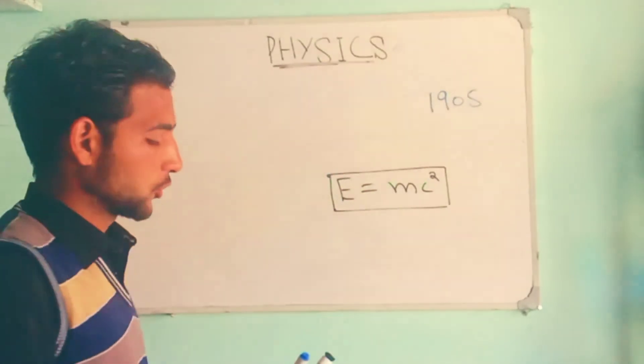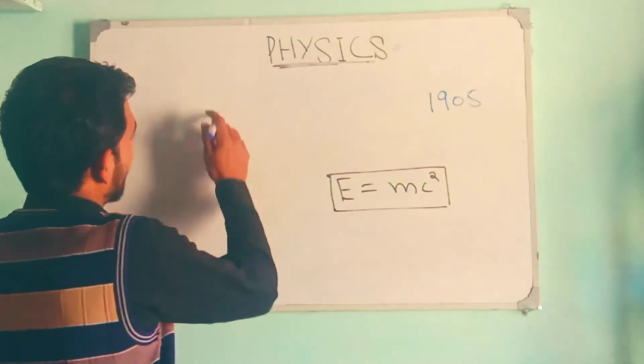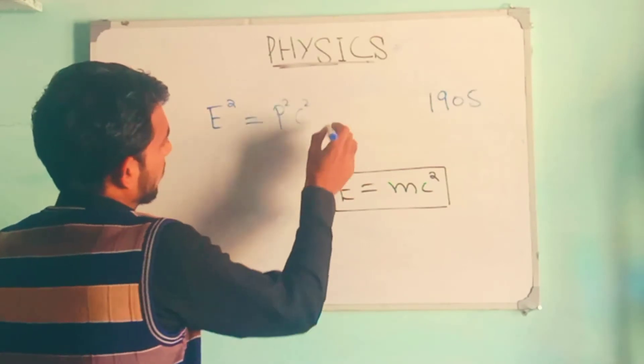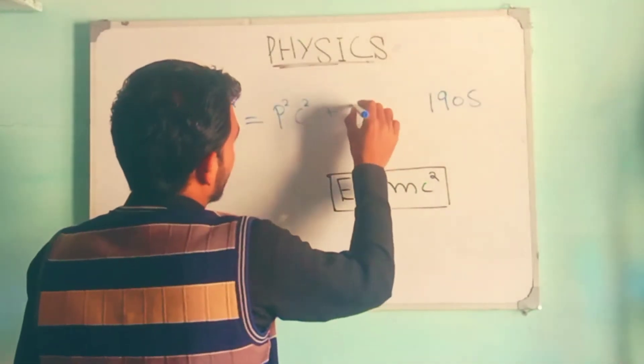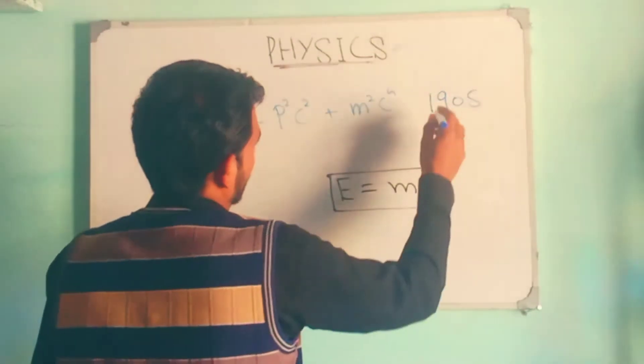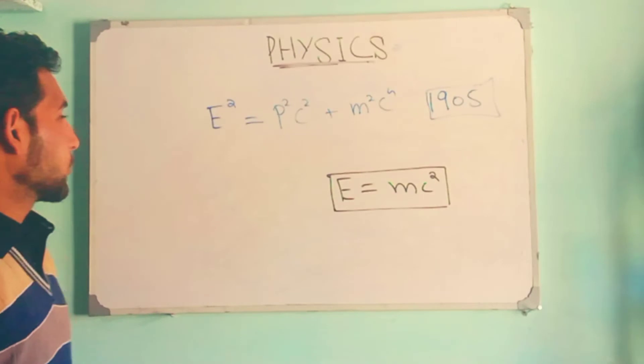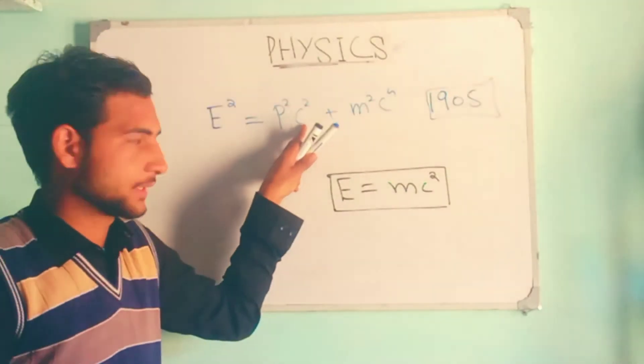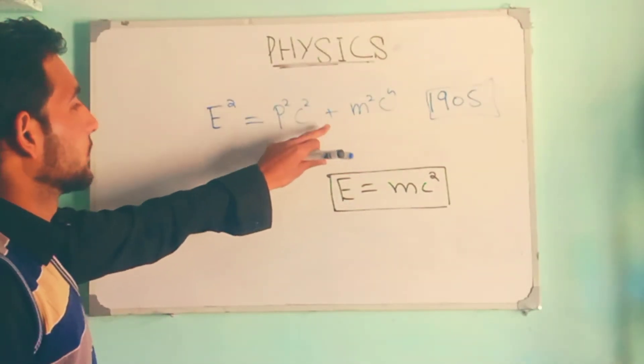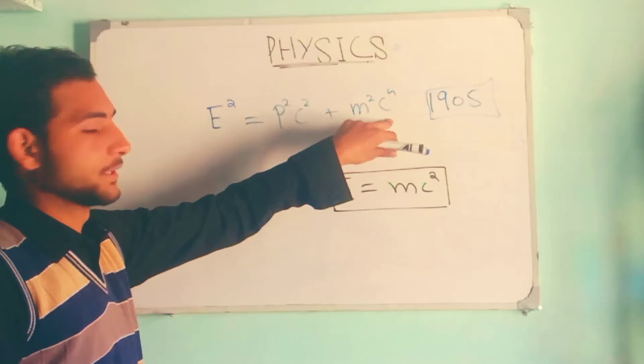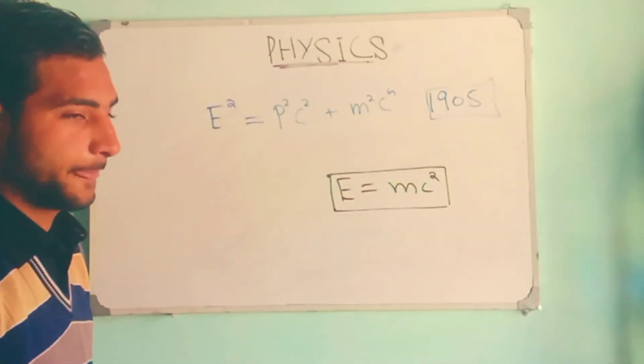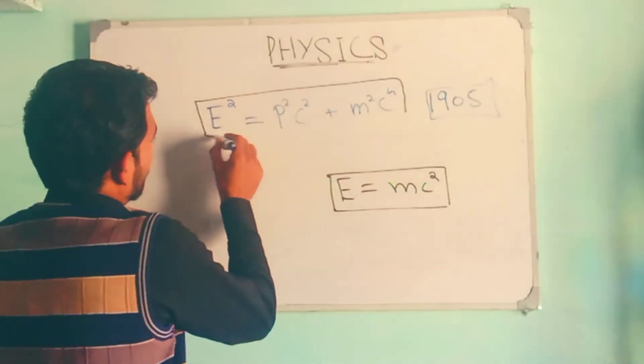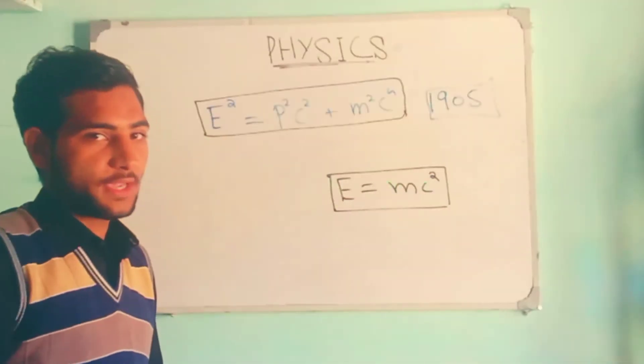This equation is the simplest form of another equation. The actual equation in that paper was E² = p²c² + m²c⁴, where E is energy, p is momentum, c is the constant speed of light, and m is mass. This is the actual form of this equation that Einstein gave in his paper.